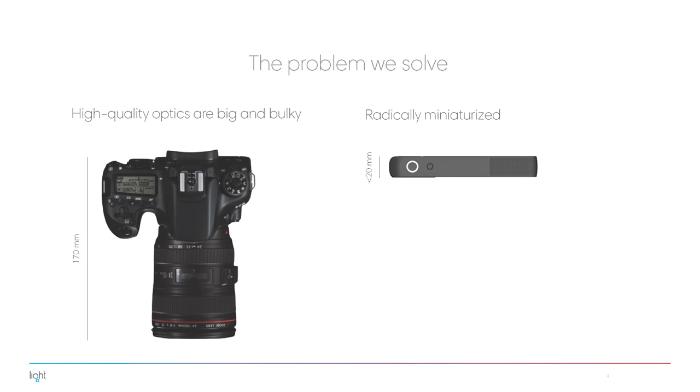The problem we're trying to solve is one I actually face myself. I'm a photographer to some extent, and I have lots of Canon glass and invested a lot of money in full-frame cameras. But I found myself not carrying them around — especially as smartphones became better, I found myself taking more and more pictures with smartphones. Really good quality cameras were sitting on my shelf, but they weren't with me when I needed to take the picture. That's what caused me to look into solving this problem.